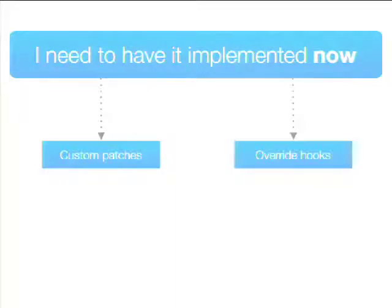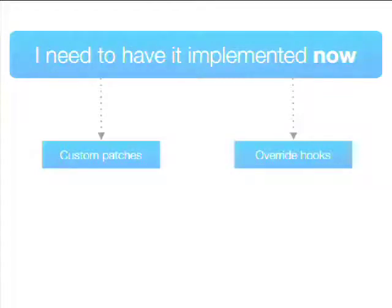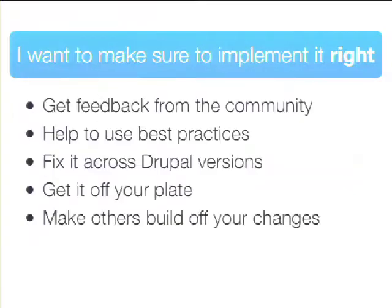I've explained two methods for solving your problem when you need to implement something right now. You don't need to cooperate with the Drupal community for any of these things — you go on your own stuff, do your own custom patch, or do your own override hooks. You can collaborate by submitting your override hooks as a module and your patches in the Drupal.org issue queue. This is very good for fulfilling your business requirements and getting fixes in very fast.